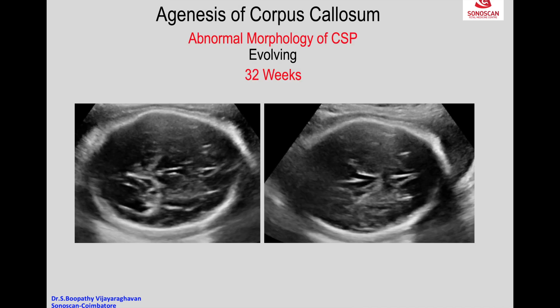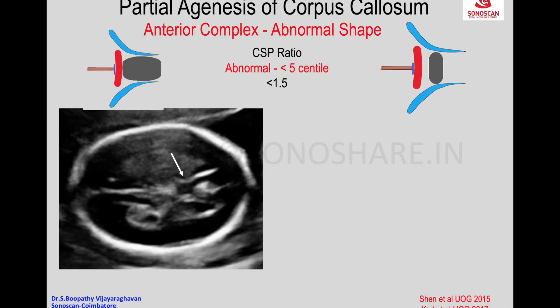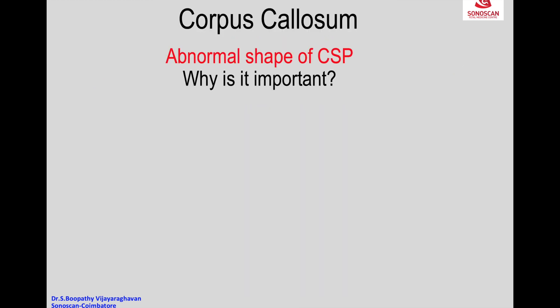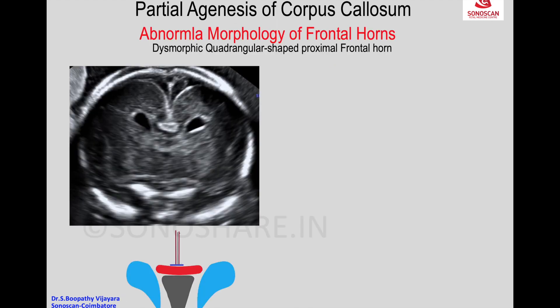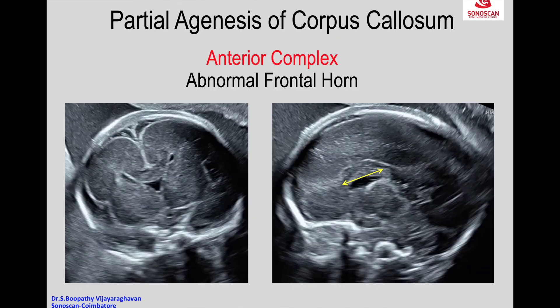Later on at 32 weeks, it shows that the anterior complex is not normal by the CSP ratio, which is described in the lecture on anterior complex. This is another appearance of partial agenesis of corpus callosum. The abnormal shape of the CSP relates to the anterior complex and the frontal horns — the frontal horns show a dysmorphic quadrangular-shaped proximal frontal horn as shown in the schematic, and the morphology of the frontal horn may be abnormal.